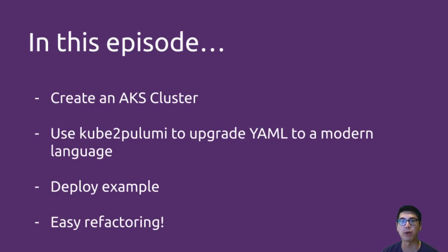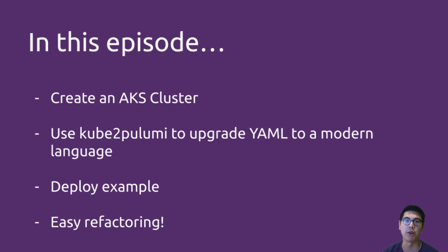So today we're going to go through a couple things. We're going to create an AKS cluster. We're going to use kube2Pulumi to actually convert a YAML manifest to a modern programming language example, and then we're going to deploy it and do some quick, simple refactoring now that it's in a modern programming language, all in a few minutes here on Modern Infrastructure Wednesday.